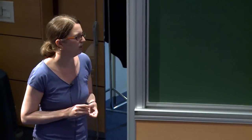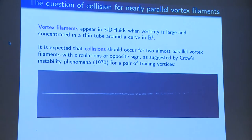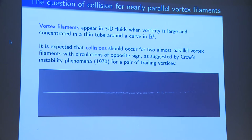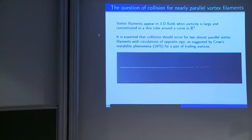A vortex filament is a 3D fluid where the vorticity is concentrated along a curve in R³. Collisions and the reconnection of vortex filaments happen in turbulent fluids, so it is an important phenomenon, but of course it is very difficult to capture mathematically. One situation which is rather simple to understand is the case of two almost parallel vortex filaments with opposite circulations, as suggested by Crowe's work in the 1970s.